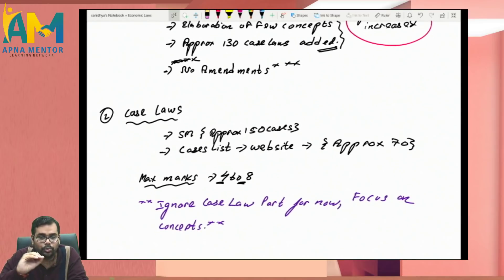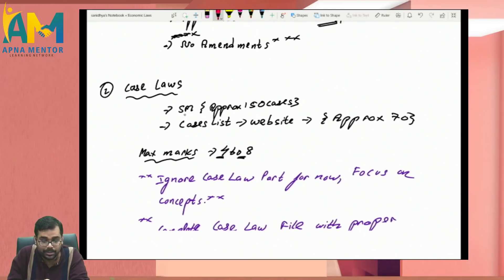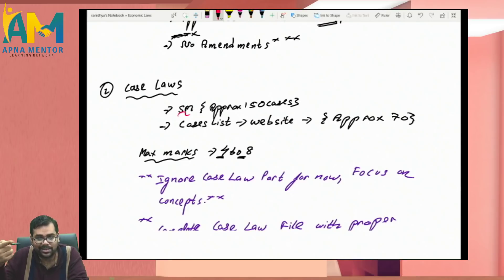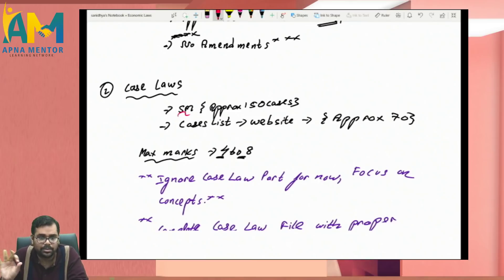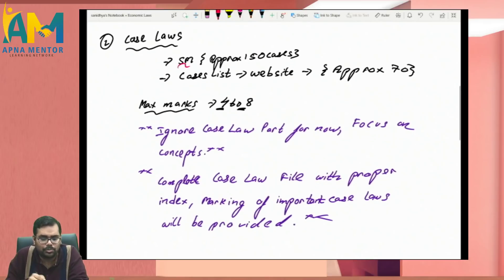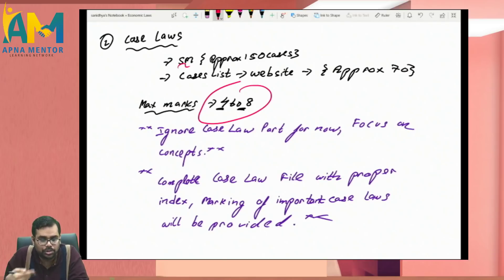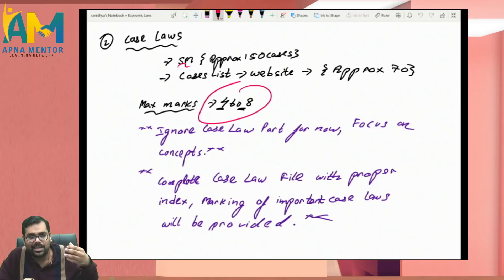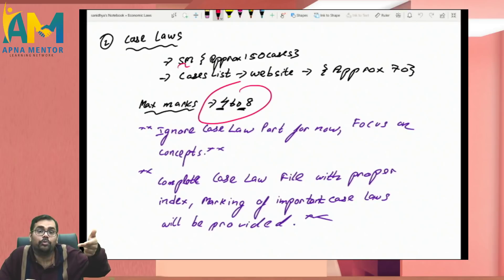Regarding case laws, if you see the total number given by ICAI, the study material includes around 150 case laws, and the website has another 70, making approximately 220 to 230 case laws in total. There is no separate weightage for case laws — maximum you can get questions worth 4 to 8 marks, and those will be application-based. Even without remembering the specific case, you can answer based on the section and get step marks — perhaps 2 out of 4.